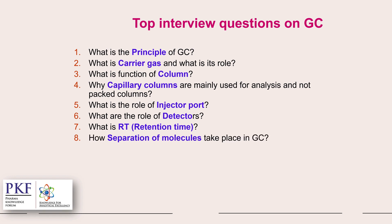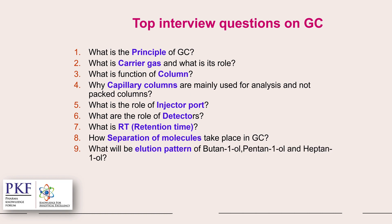How does separation of molecules take place in GC? For separation, different components are interacting with different capacity with the stationary phase and mobile phase. This interaction depends upon the boiling point of the component as well as the polarity of the molecule and the stationary phase.